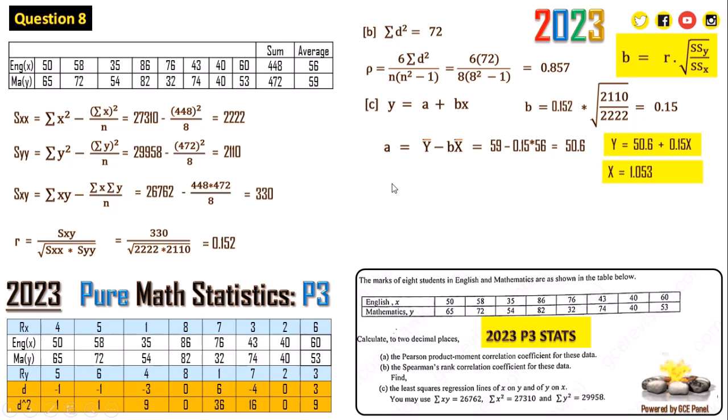Then for the equation where we have x to be equal to c plus dy. In this case we are going to have our d to be equal to 330 over 2110. Then for the value of a we have a is equal to x bar minus d times y bar. So we have 56 minus 0.16 times 59, that gives us 46.56. From here we can write x equals 46.56 plus 0.16y.